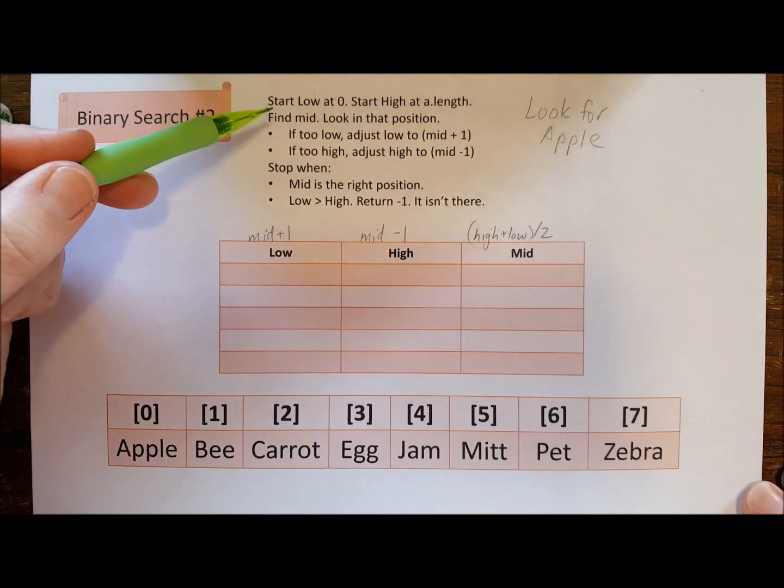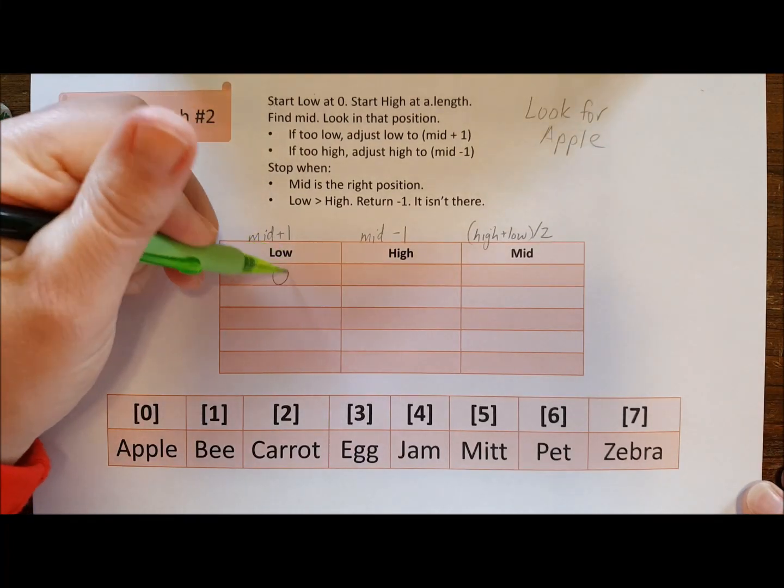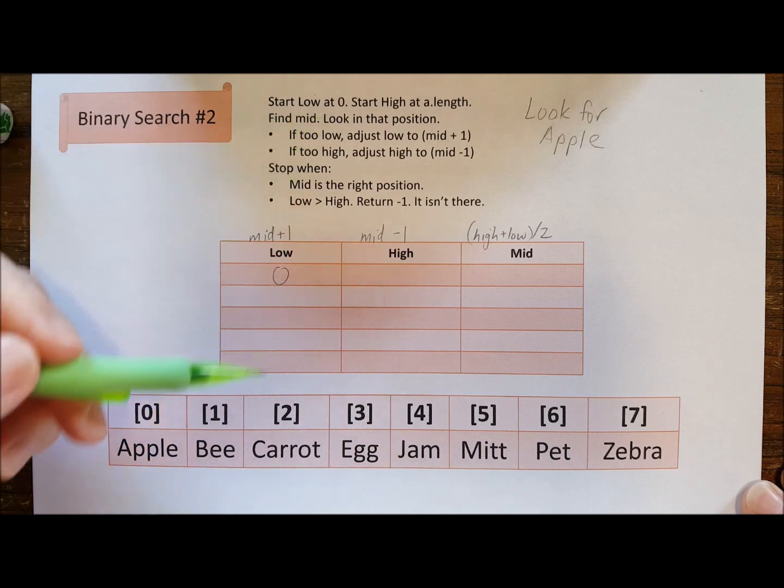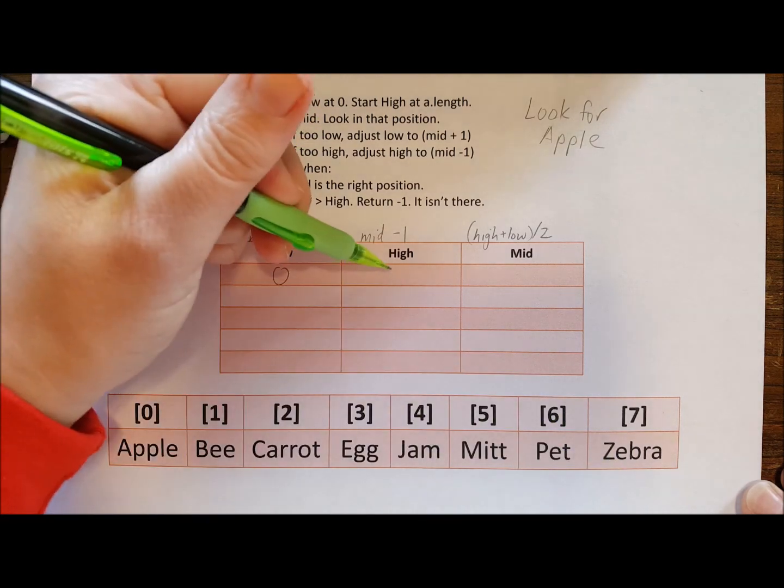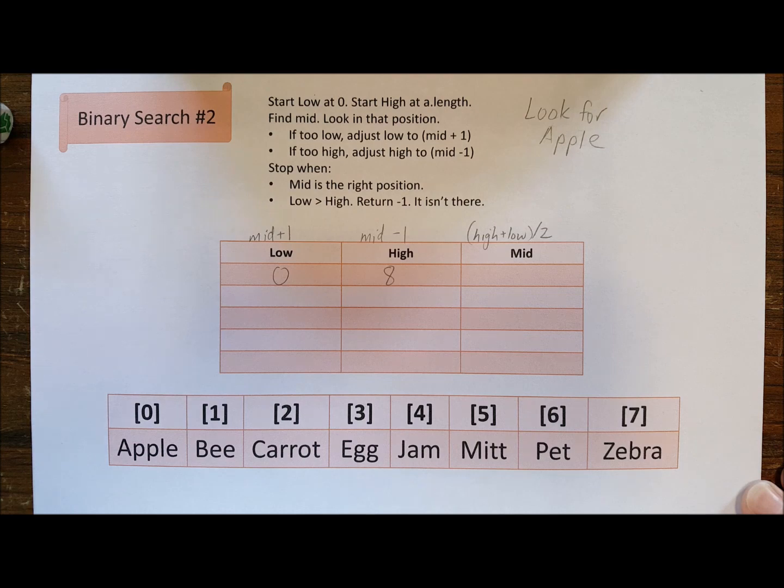Okay, so let's do another example. It says here that we have to start low at zero. We're going to start high at a.length, so that's going to be eight. Notice it's one higher, that goes wrong a lot.